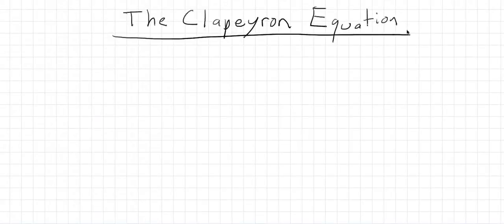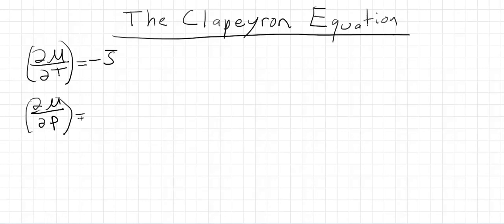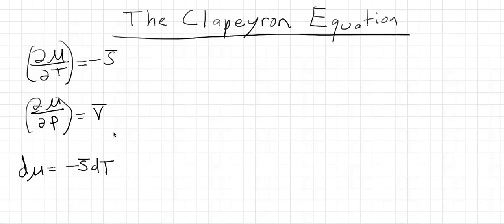We're going to derive the Clapeyron equation, but first we need to look at how the chemical potential varies with temperature and pressure. The change in chemical potential with temperature equals the negative of the molar entropy, and the change in chemical potential with pressure equals the molar volume. Putting those together, the overall change in chemical potential is the negative of the molar entropy times dT plus the molar volume times dP — just like the differential for the Gibbs function, but using molar quantities.